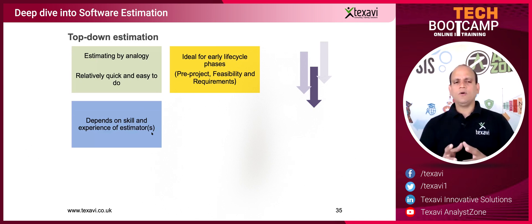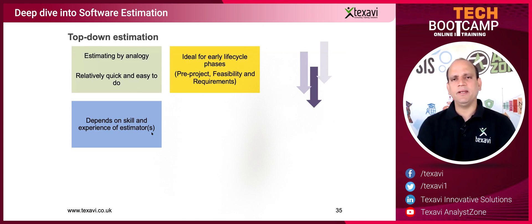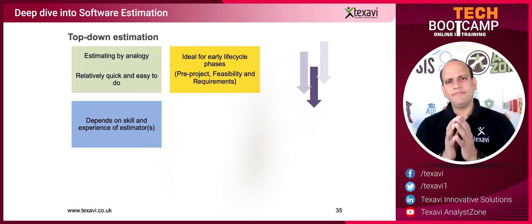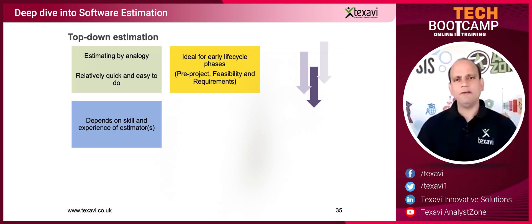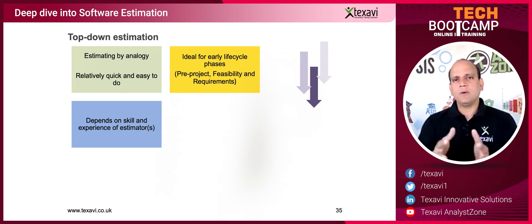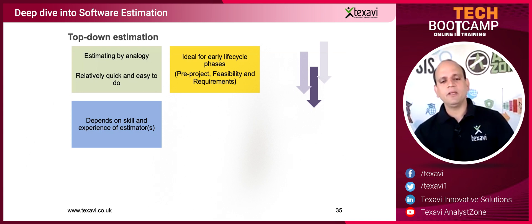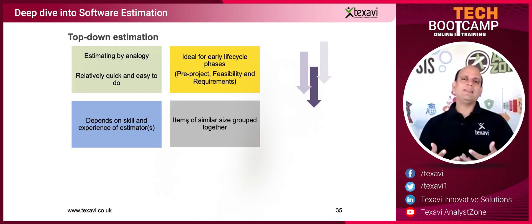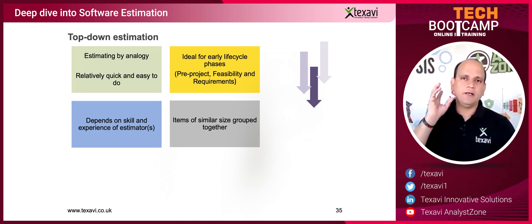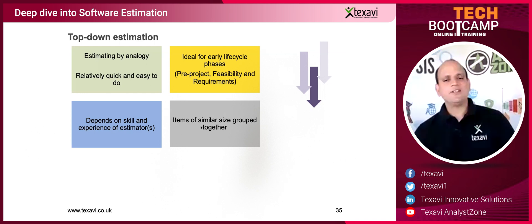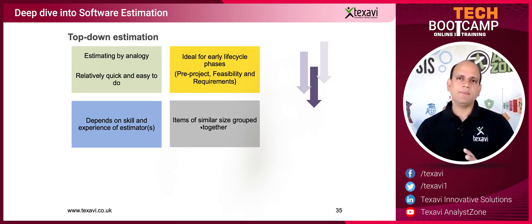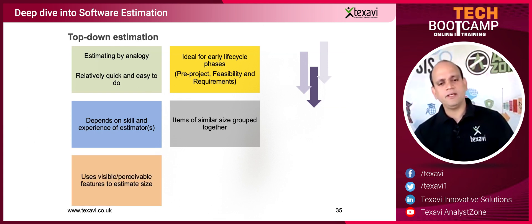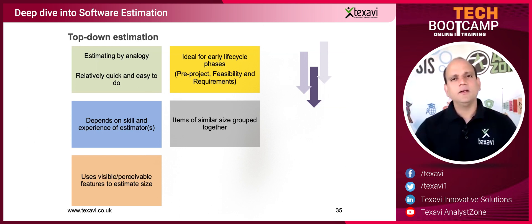The quality of top-down estimation really depends on the skill and expertise of the estimator. If the person has good experience — say they've developed four or five different websites and the team has been working together a long time — they can produce a better top-down estimate than someone relatively new, who has nothing to compare with. Experienced estimators have a rough picture in their mind based on similarity, comparing and contrasting with what they already know. The starting point is always size, and from size you derive effort, then schedule and cost.